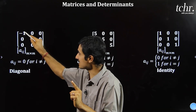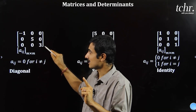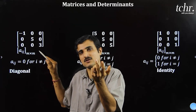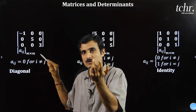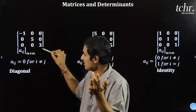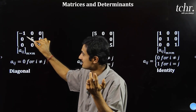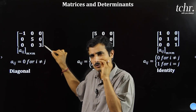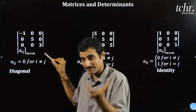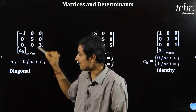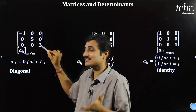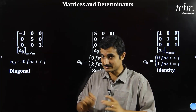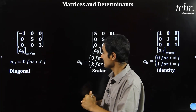Diagonal elements — they can be any value or zero, that is allowed. But all other non-diagonal elements must be zero. So the non-diagonal elements must all be 0, 0, 0, 0, 0, 0 — that is mandatory.